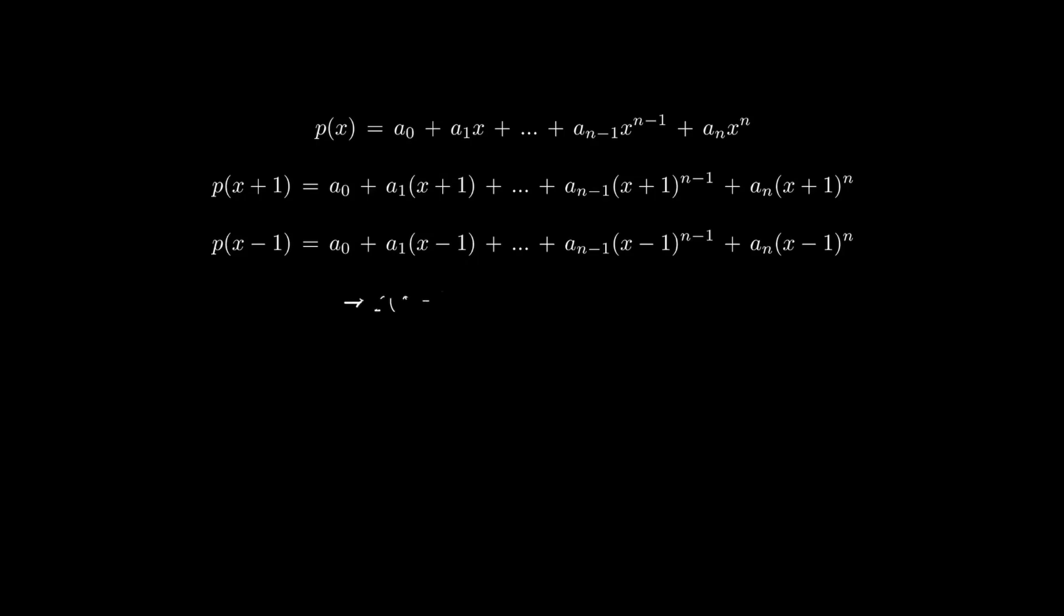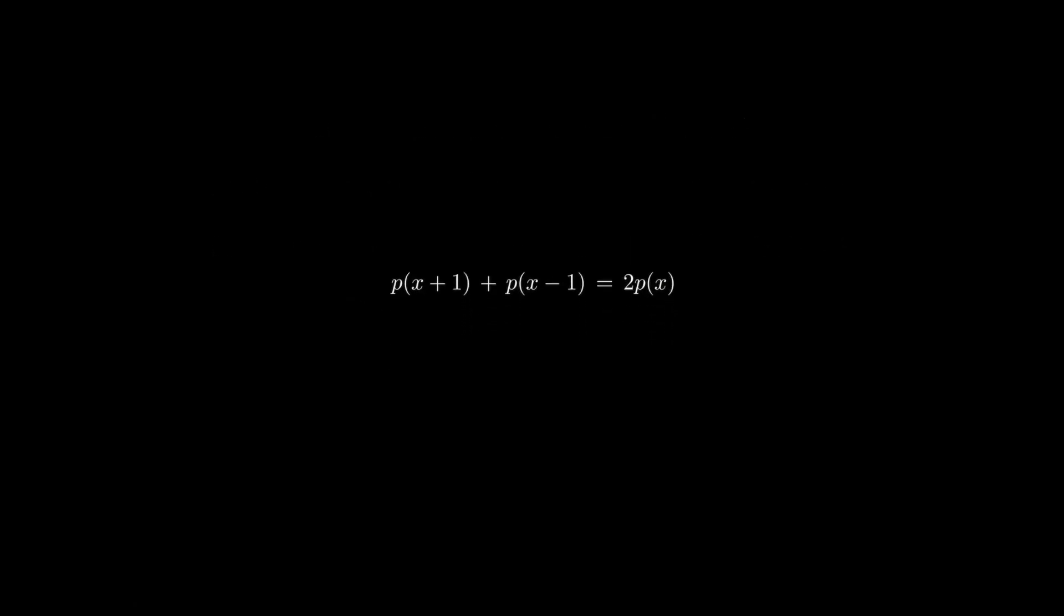Now we can see that the degree and the leading coefficient of the three polynomials are the same. So when we add p(x+1) with p(x-1), given that this sum is divisible by p(x), we know that this sum must be exactly 2 times p(x). So p(x+1) + p(x-1) equals 2p(x).